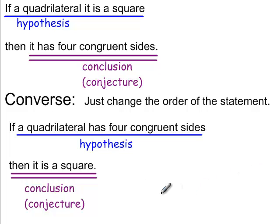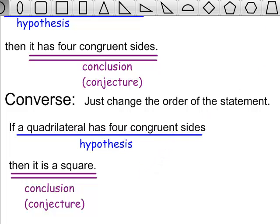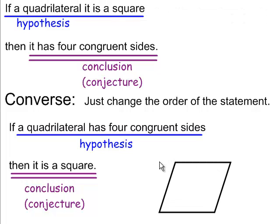Let's think about this: if a quadrilateral has four congruent sides, then it is a square. Well, a rhombus has four congruent sides. If you have a figure where all the sides are congruent and it's a quadrilateral but it's not a square, then this is a false statement — and what I just did was provide a counterexample.